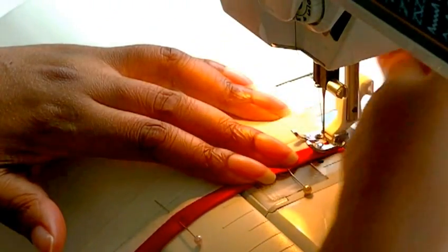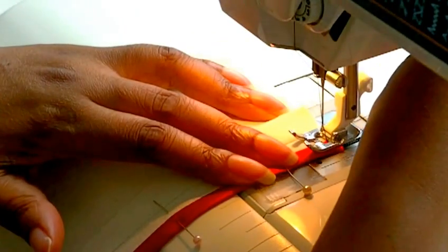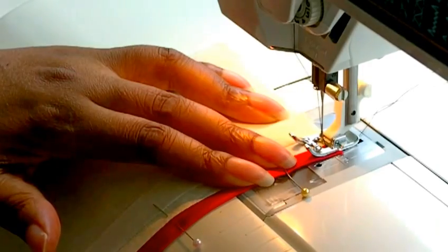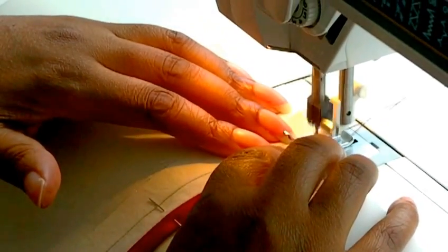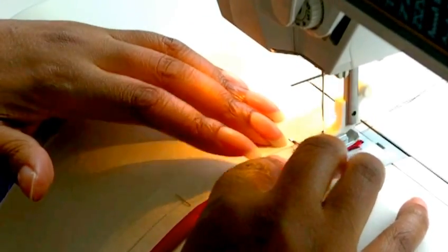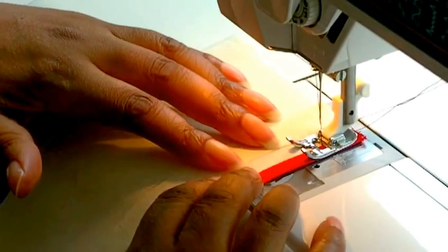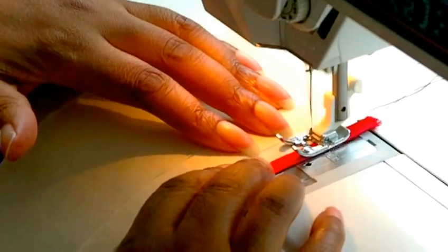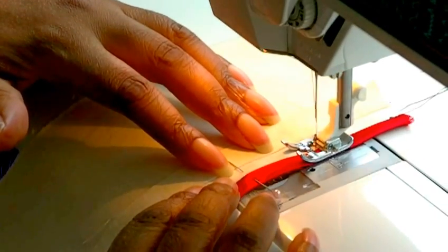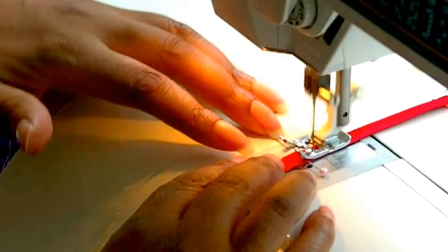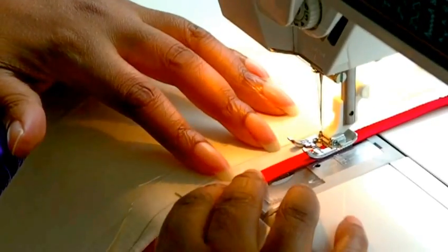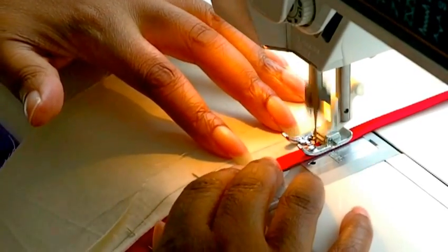So I'm going to get it as close as I possibly can to my bias binding. And obviously when you're using the thread, you'll be matching the color scheme of your sewing project. You just want to make sure you get it as close but don't stitch onto the actual bias, because you want it to have that neat professional look.